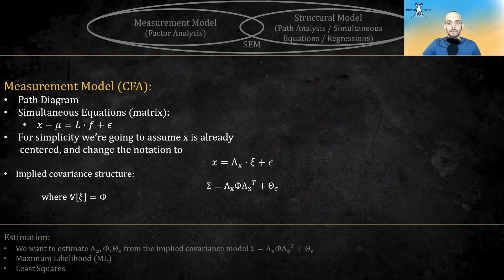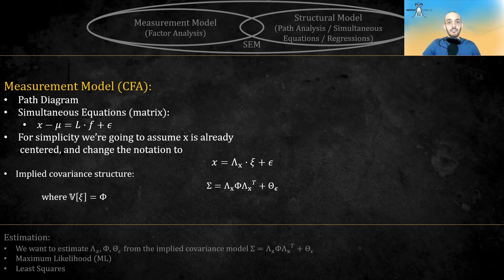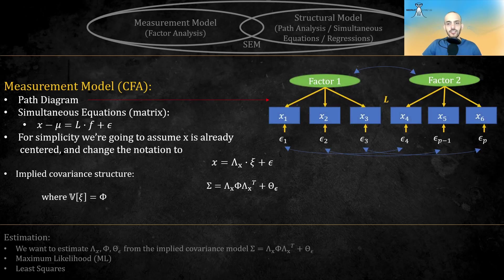Let's start with the measurement model. This is basically CFA. If you don't know what CFA is, I suggest you check my last video, EFA vs CFA, where I explain about it, and I link it to this video. The path diagram looks like this. We have latent factors as green ovals, that manifest via observed variables in blue rectangles. And we have the uniqueness, the epsilons, which can also be thought of as noise.